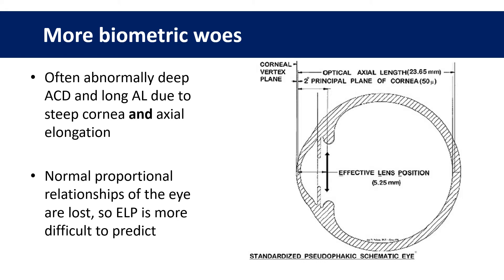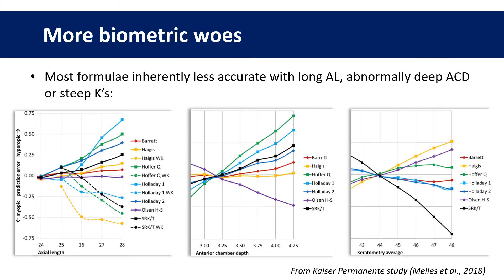But there's more. Keratoconics often have abnormally deep anterior chambers and long axial lengths, and the AC depth can no longer accurately predict the effective lens position because the normal proportional relationships have been lost. As you can see in the graphs here, most formulae are already inherently less accurate in eyes with long axial lengths, and the same applies for eyes with abnormally deep anterior chambers or abnormally steep Ks. Obviously all of these are relevant in keratoconus, so the cumulative potential for error is pretty high.